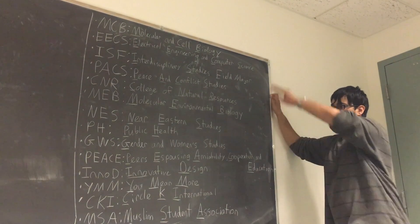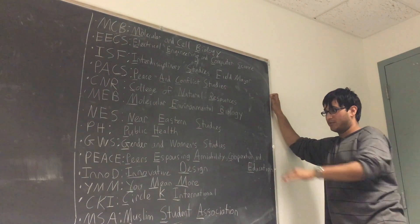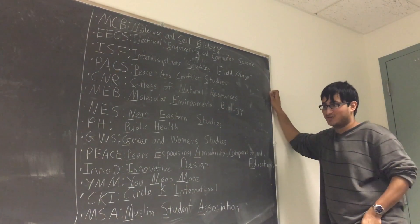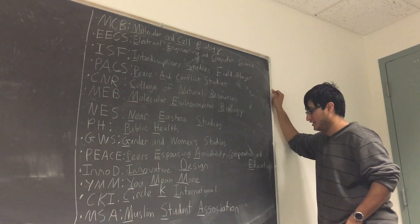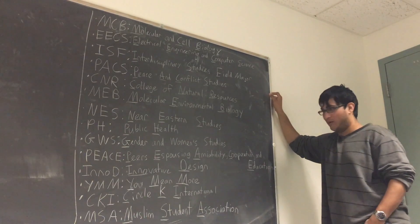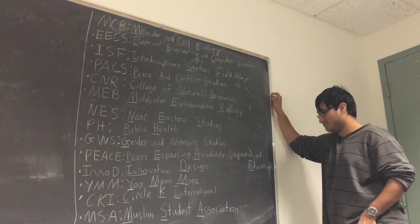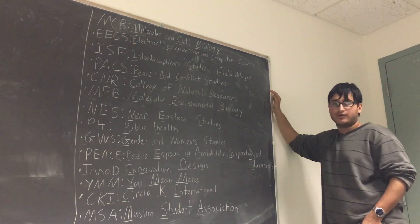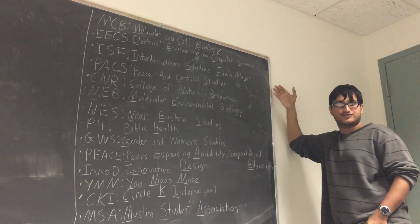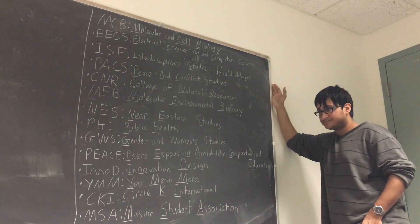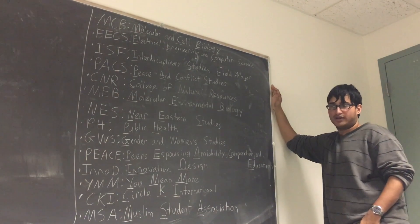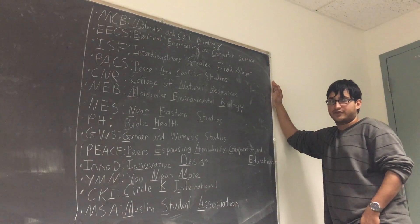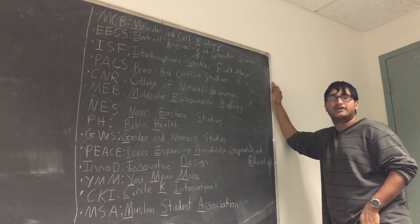That covers the majors. Now we're covering a few organizations. PEACE is an organization — the acronym stands for Peers Espousing Amiability, Cooperation and Education. PEACE provides free one-on-one tutoring and advising services for Cal students. Their services are available both online and by request, and they're a pretty useful organization for getting academic and social support on campus.